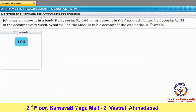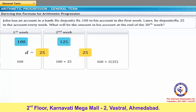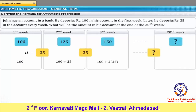Let us consider problem 3. After saving 100 rupees in the first week, John saves 25 rupees every week. Therefore, the common difference, D, in John's savings every week is 25. Thus, the balance in John's account is 100 in the first week, 100 plus 25 in the second week, 100 plus 2 multiplied by 25 in the third week, and so on. Let John's savings in the first week, that is, the first term in the sequence, be A. In this problem, A equals 100 and the common difference D equals 25.